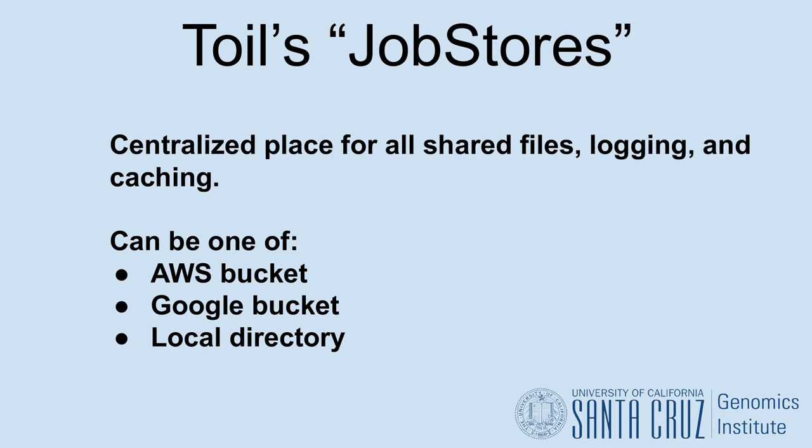Besides telling Toil which batch system to run in, Toil also needs to know a centralized location to keep all shared files, logs, and cached files. Toil calls this the job store. The job store can be any directory folder that's universally accessible, or it can alternatively be a cloud bucket on either Google or AWS, provided you have the appropriate cloud credentials to access it. Batch systems and job stores can be mixed and matched — you can run a local workflow via single machine with an AWS job store, and vice versa, as just one example.